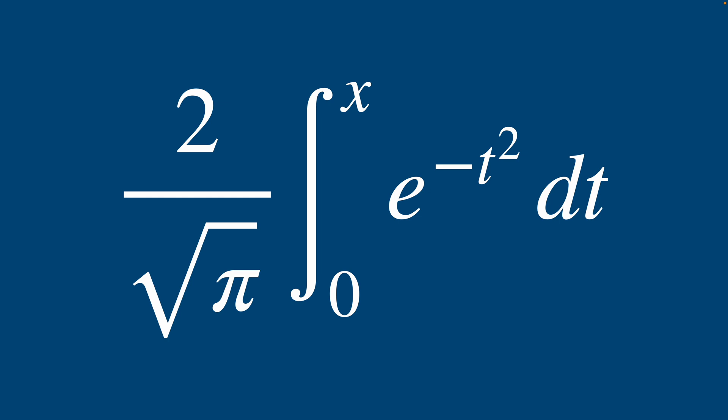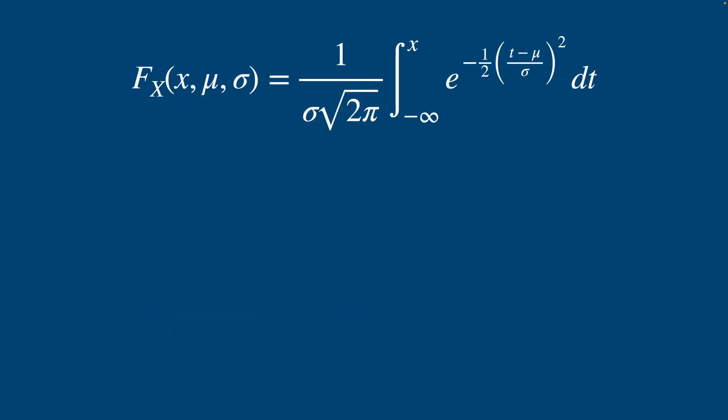We're going to start with our original Gaussian distribution which you can see on the top here, and then do a quick substitution with z equals (t minus μ) divided by σ√2. Our derivative with respect to z is that expression on the right.